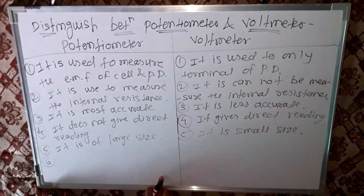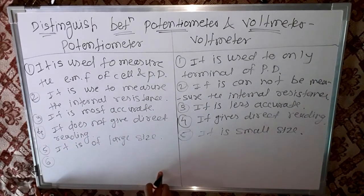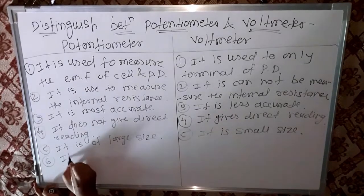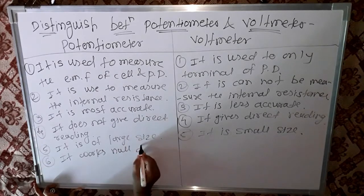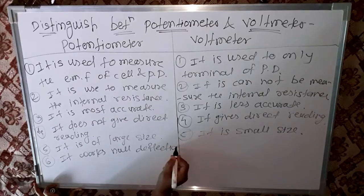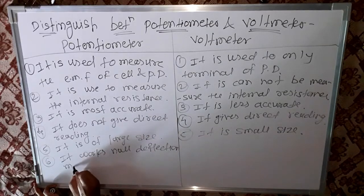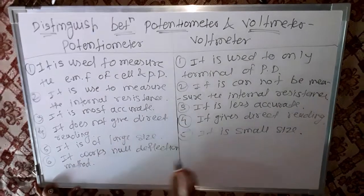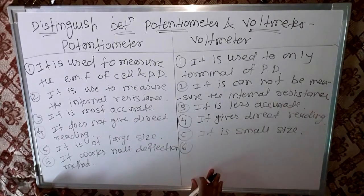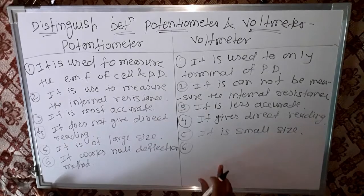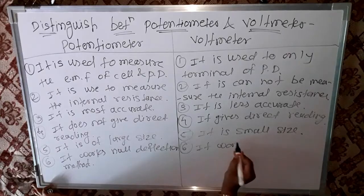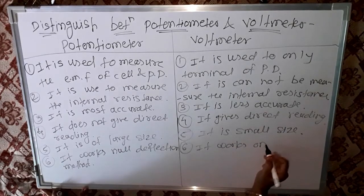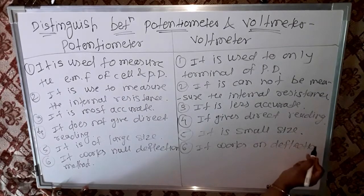Sixth point: the potentiometer works on the null deflection method. In contrast, the voltmeter works on the deflection method.